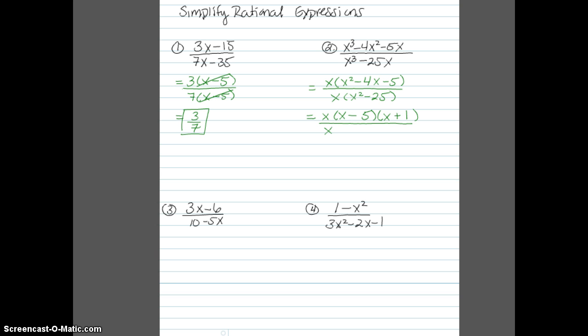In the denominator, the x² - 25 can be factored as the difference of two squares. So x - 5 times x + 5. And now we can go ahead and cancel out those common factors of x and x - 5 to give me x + 1 over x + 5. And again, this expression is equal to the original expression.